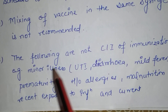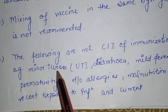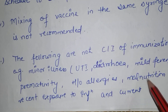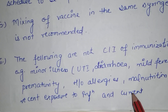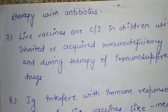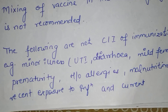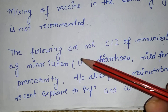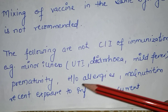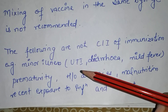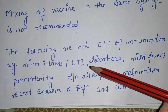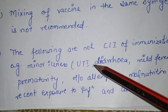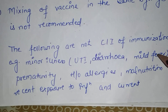The next principle is: the following conditions are not contraindicated in immunization. If a child is having minor illnesses like UTI, diarrhea, mild fever, prematurity, history of allergy, malnutrition, recent exposure to infection, or current therapy with antibiotics — vaccination can still be given. Mothers sometimes think their child should not be vaccinated due to a minor illness, but these are not contraindications.